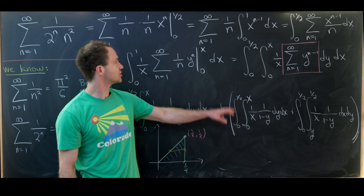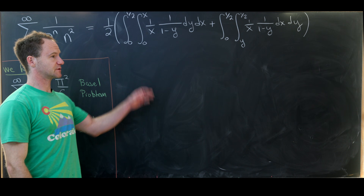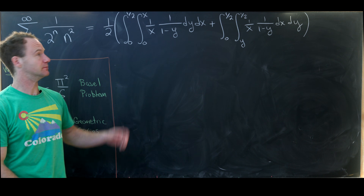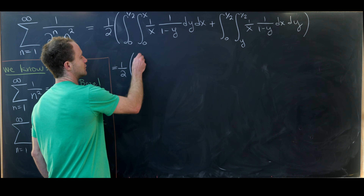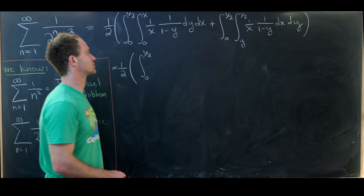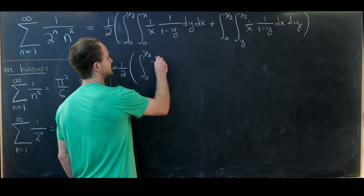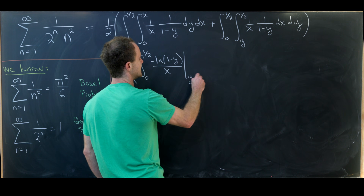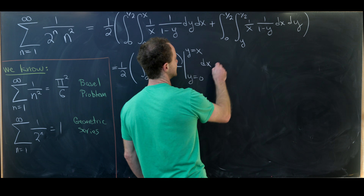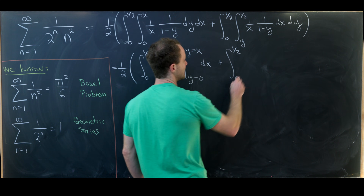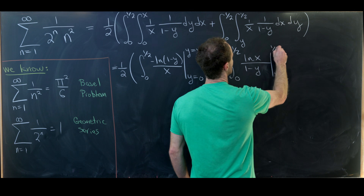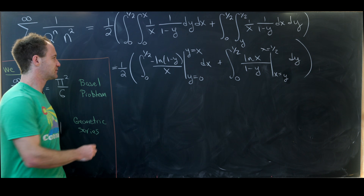Let's bring this expression up and finish it off. We have our goal sum as 1 half times the sum of two double integrals. Evaluating the inner integrals: in the first we integrate with respect to y, giving minus natural log of 1 minus y over x, evaluated from y equals 0 to y equals x, then dx. In the second we get natural log of x over 1 minus y, evaluated from x equals y to x equals 1 half, then dy.